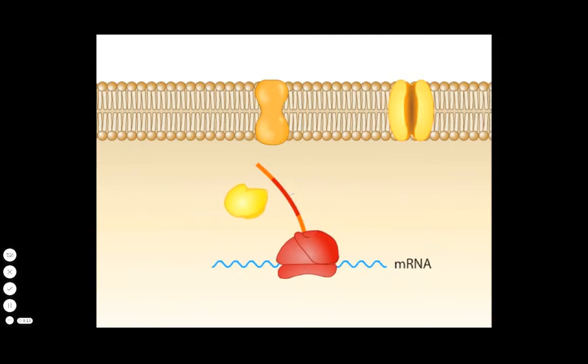A cytoplasmic structure called a signal recognition particle, or SRP, quickly binds to the signal sequence. SRP, which is a complex of RNA and protein, essentially paralyzes the ribosome.